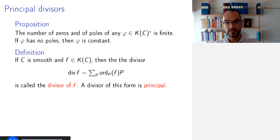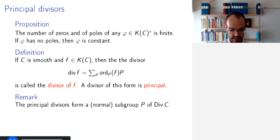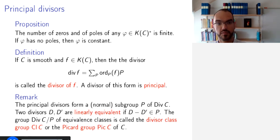And a divisor of this form, a divisor for which we can find a function f such that this holds, is called a principal divisor. And the principal divisors form a subgroup of the group of divisors. And since that group is abelian, this subgroup will be a normal subgroup. So, we can look at the quotient group. So, what does it mean to be in the quotient group?